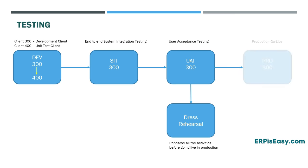Then comes the actual go live. Once the dress rehearsal is completed, the production cutover will start. Transports will be moved to the production system from the UAT system, followed by the data load. Users will be unlocked and they will be able to log in and start executing their business transactions in the production system.